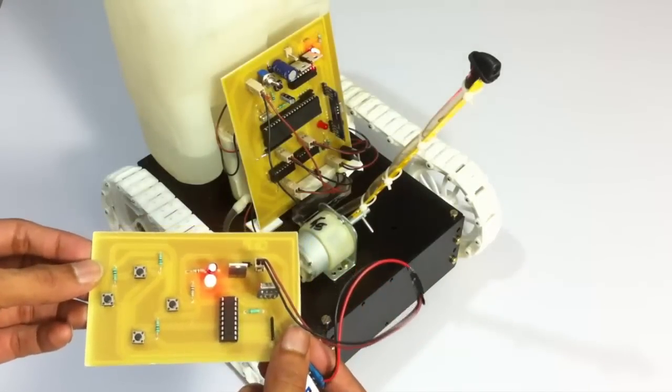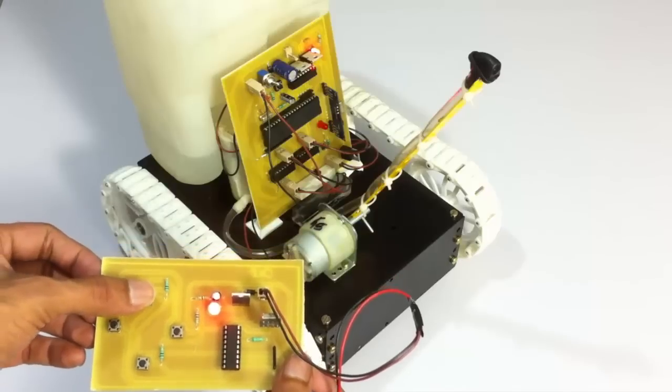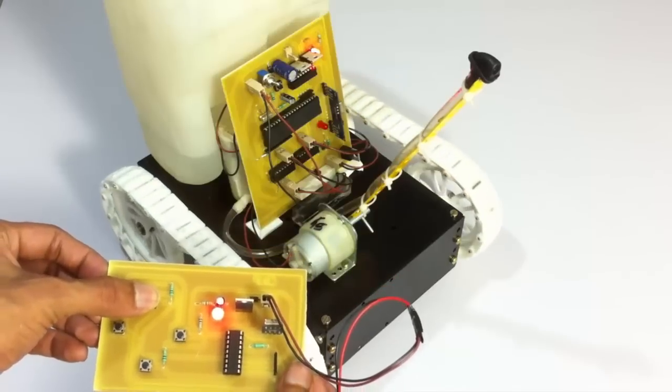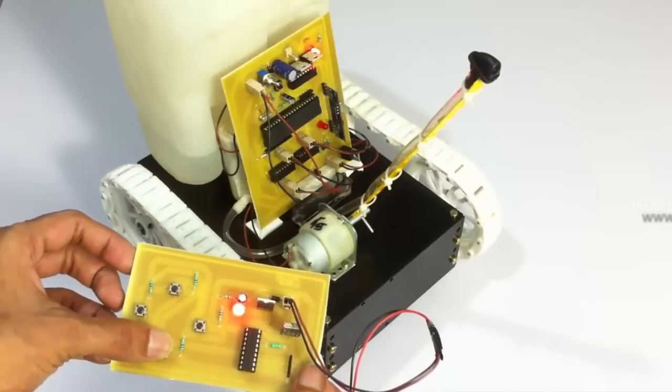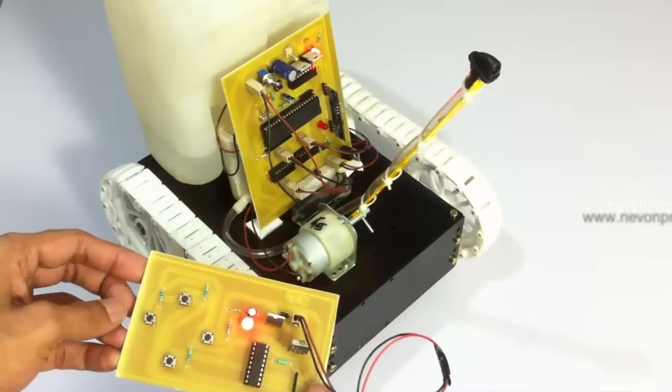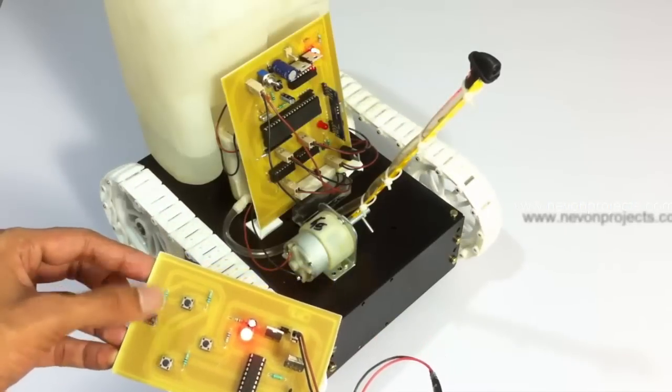We'll be using the remote here to operate the vehicle. Let's first see how it turns in forward and backward directions. This is the forward direction, and this is backward. Now let's see left and right motions.